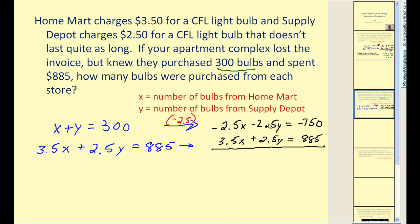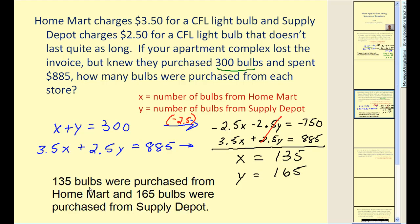So when we add these equations together, the y terms are opposites. That will simplify to zero. So we're left with x equal to 135. So we know that there were 135 bulbs purchased from the home mart store. Since we know the sum of x and y must equal 300, we could replace x with 135. But you can probably see that since the sum equals 300, y must equal 165. As a result, we can conclude 135 bulbs were purchased from home mart and 165 bulbs were purchased from Supply Depot.